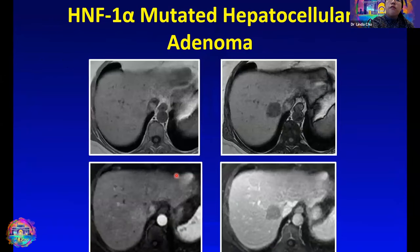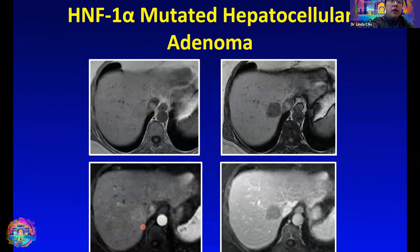The presence of fat is also a helpful marker for adenoma. On the top row, in-phase and out-of-phase images demonstrate signal loss within the lesion on the out-of-phase image, indicating the presence of fat. On the bottom row, arterial and venous phase images show an arterially enhancing lesion with a little bit of washout. A fat-containing lesion is very helpful in narrowing the differential to adenoma or HCC.